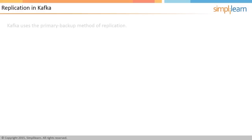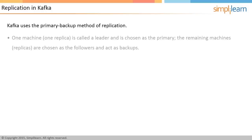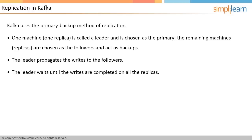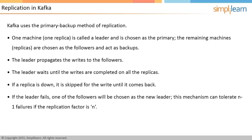Kafka uses the primary-backup method of replication. One machine or replica is called a leader and chosen as the primary; remaining replicas are followers and act as backups. The leader propagates writes to the followers and waits until writes are completed on all replicas. If a replica is down, it is skipped for the write; however, Kafka will write a copy to the machine once it is back. If the leader fails, one of the followers will be chosen as the new leader. This mechanism can tolerate N-1 failures if the replication factor is N, which can be specified at the topic level.